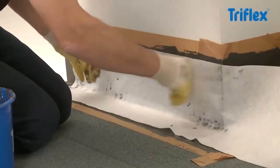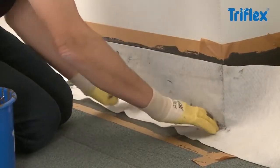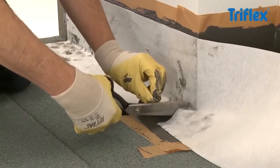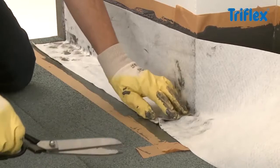Next, apply the fleece strip to the wet resin, making sure there are no trapped air bubbles. The fleece is cut to fit the corners and pressed in lightly.